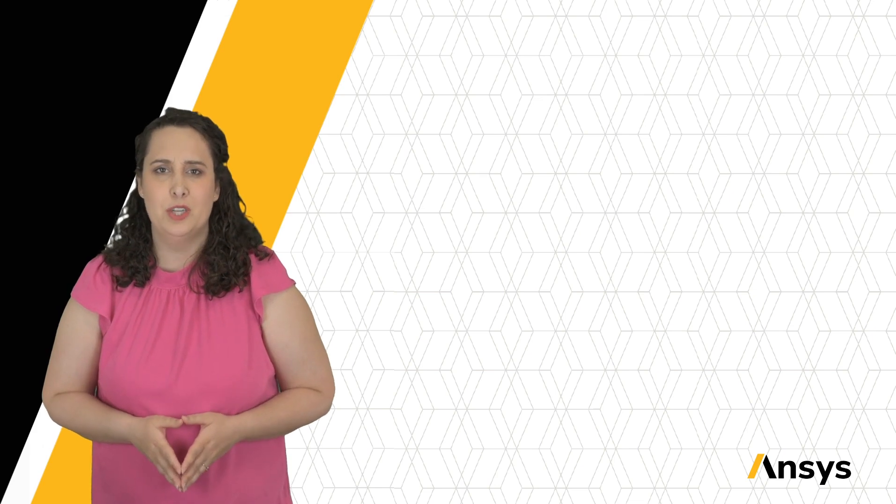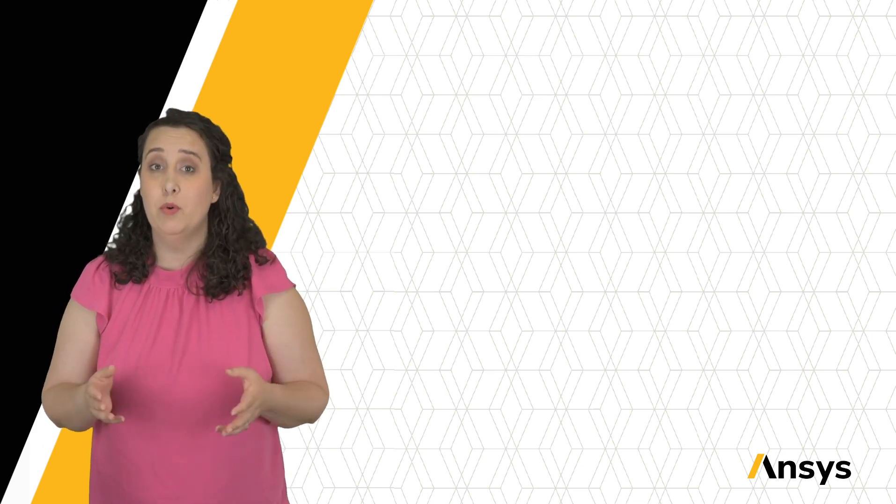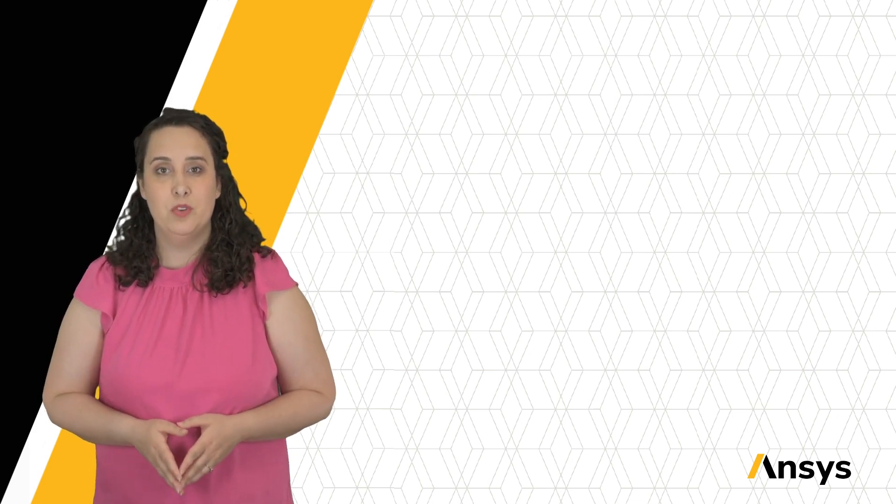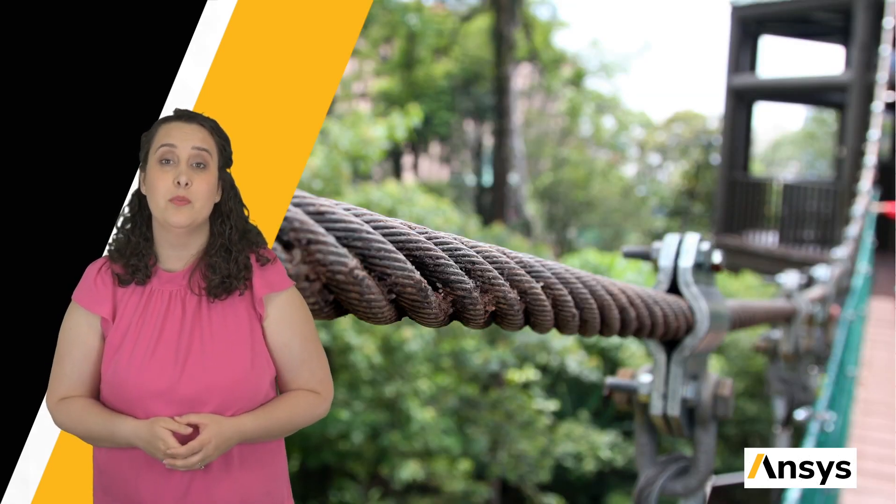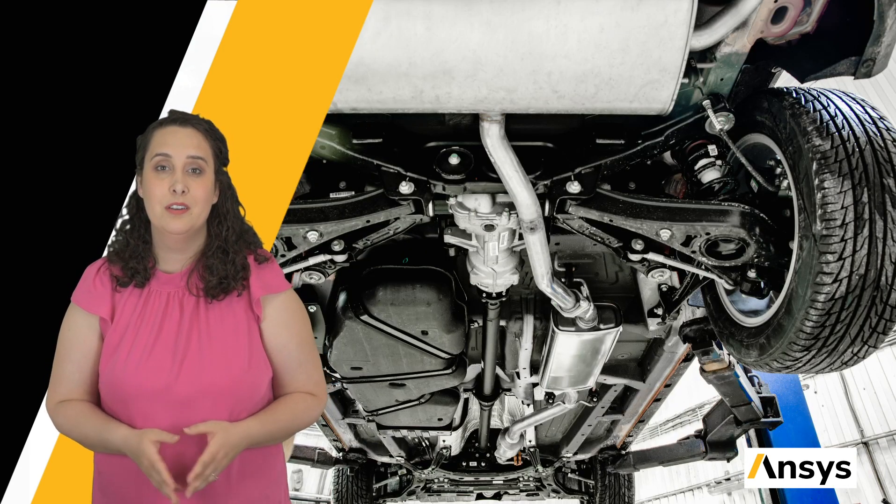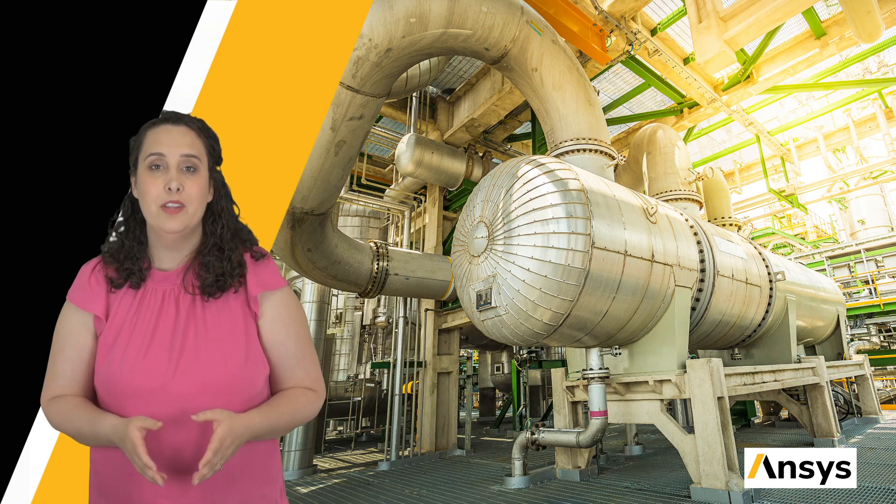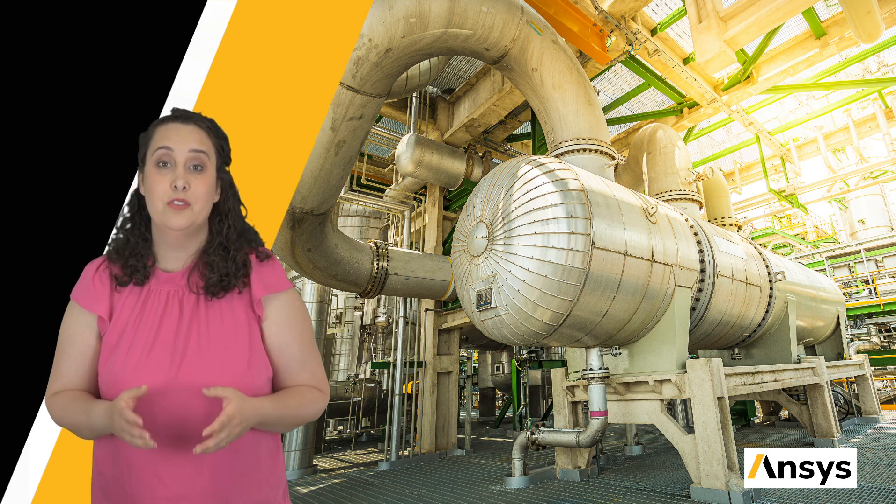But loads can be applied in many different directions. It's important to understand what mode of loading your material will experience. Often one mode will dominate, which can simplify engineering problems. Ties, such as those found in cables with suspension bridges, carry axial tension. Columns in bridges and buildings carry compression. Often columns such as this are hollow tubes rather than solid, because tubes resist buckling more easily. Beams carry bending, such as those found in an airplane wing spar. Shafts carry torsion. An example of this is the drive shaft in a car. And finally, we have shells that carry internal pressures, such as those found in pressure vessels.